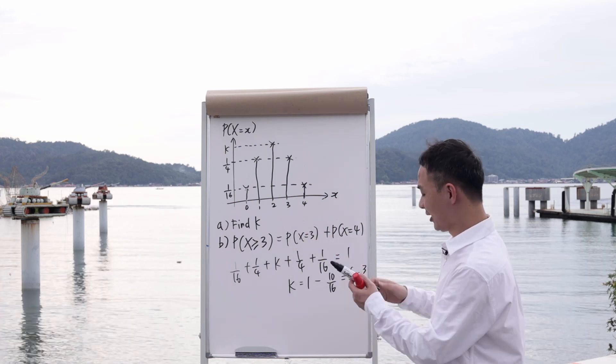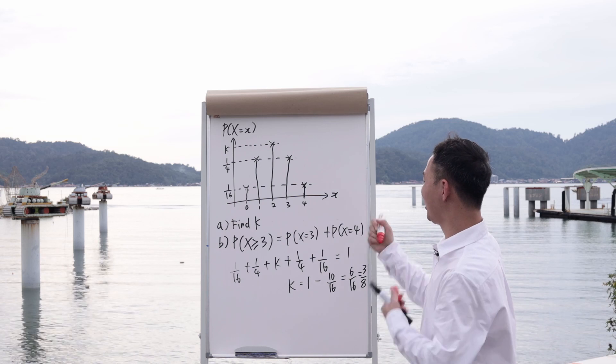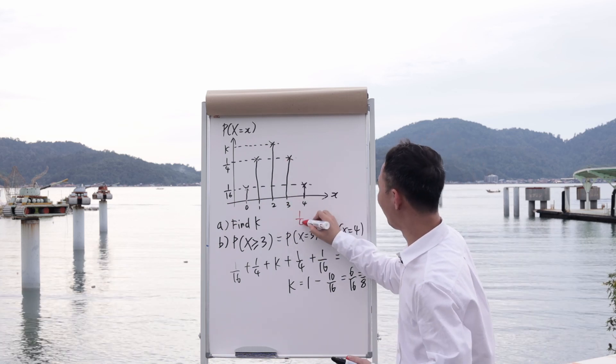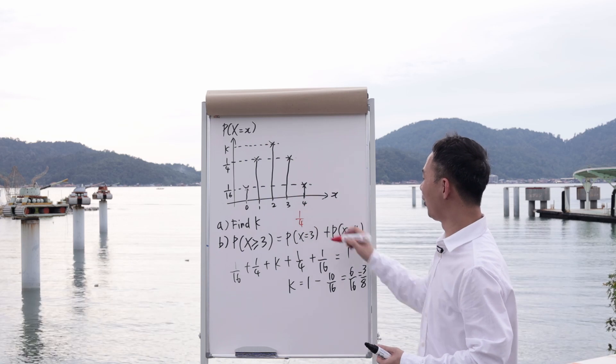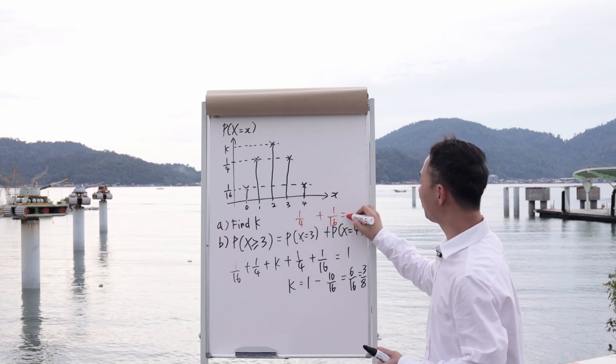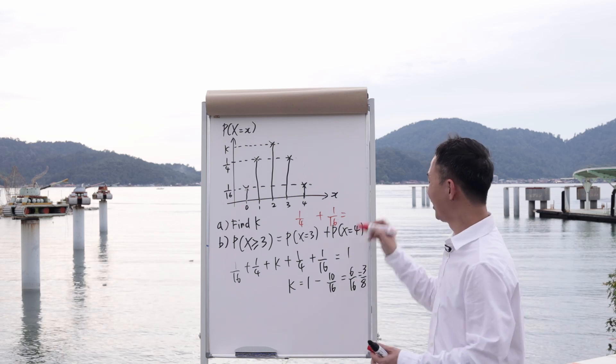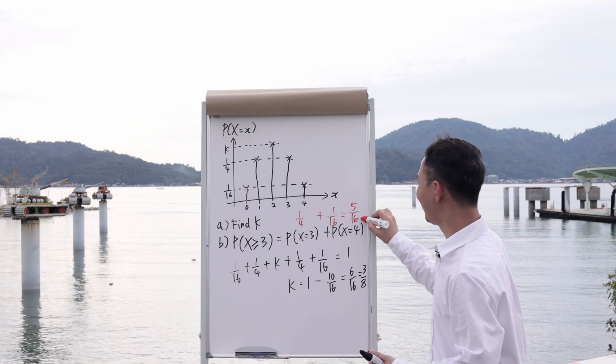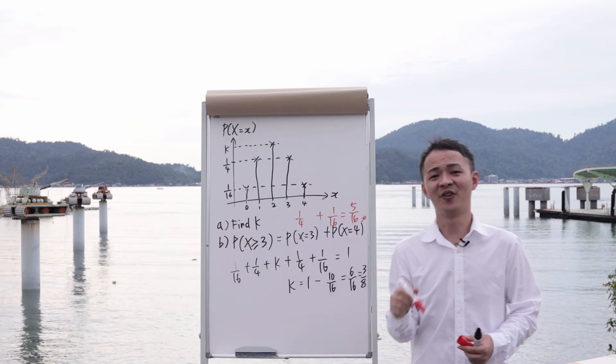When x is equal to 3, you will get 1 over 4. When x is equal to 4, you will get 1 over 16. So if you plus them together, you should easily get 5 over 16. Yeah, this is how we get the answer for part B.